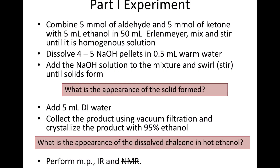In this experiment, three different chalcones will be synthesized using methyl or methoxy substituted benzaldehyde and acetophenone. The benzaldehyde and acetophenone are mixed, and then the sodium hydroxide solution is added to the mixture. The solid formed is then vacuum filtered and purified by recrystallization. Melting point, IR, and NMR are performed on the purified product.